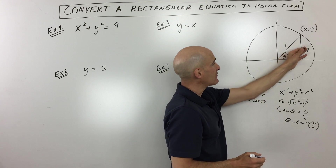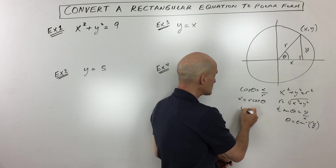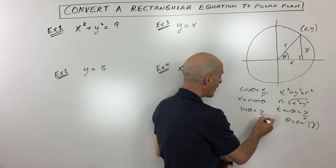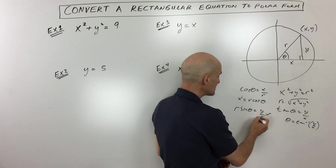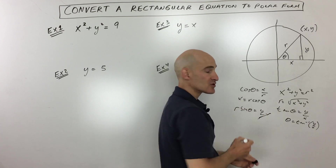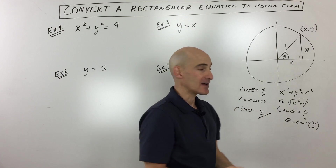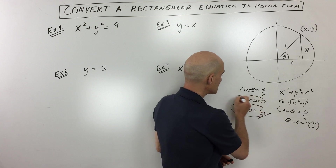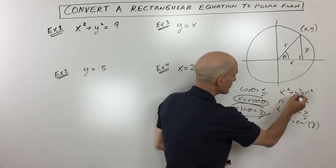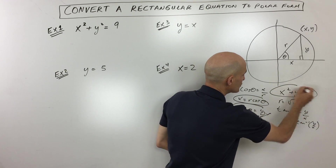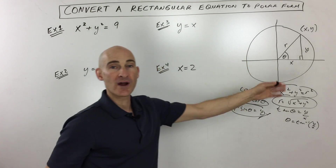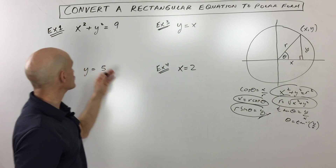Sine of theta is opposite over hypotenuse, so sine of theta equals y over r. Multiplying both sides by r, y equals r sine theta. We're going to be using all these connections to translate from rectangular to polar.